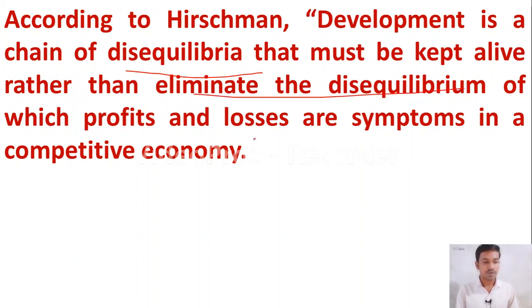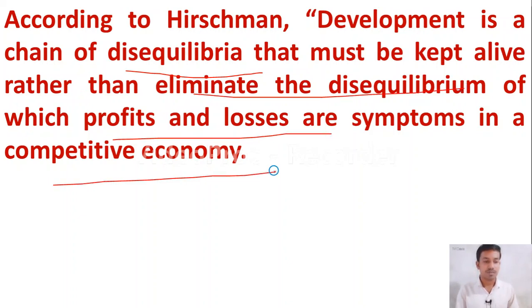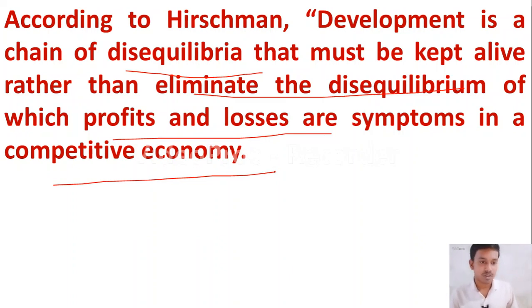The next question: the development process has been viewed as a chain of disequilibria — this statement is given by Rosenstein-Rodan, Baldwin, Levinston, or Hirschman? This is given by A.O. Hirschman. According to Hirschman, development is a chain of disequilibria that must be kept alive rather than eliminated — the disequilibrium of which profits and losses are symptoms in a competitive economy.